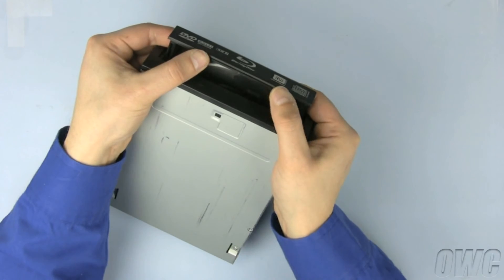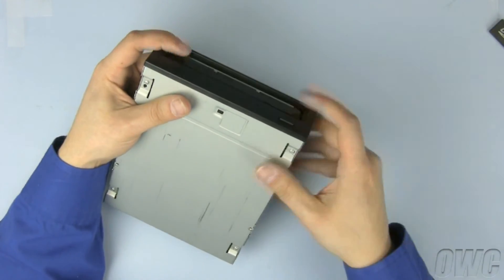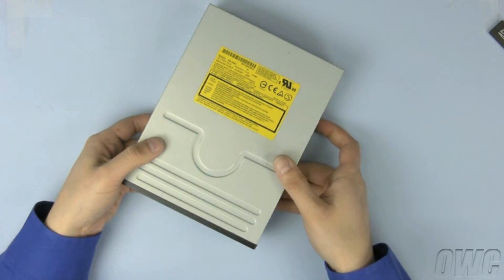Simply push forward on these tabs with your thumbs to detach them, then slide the bezel off of the tray. Push the tray back in and the drive is ready to install.